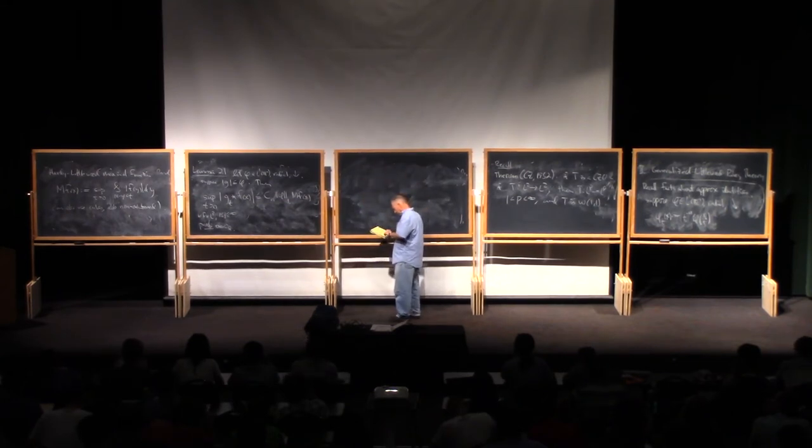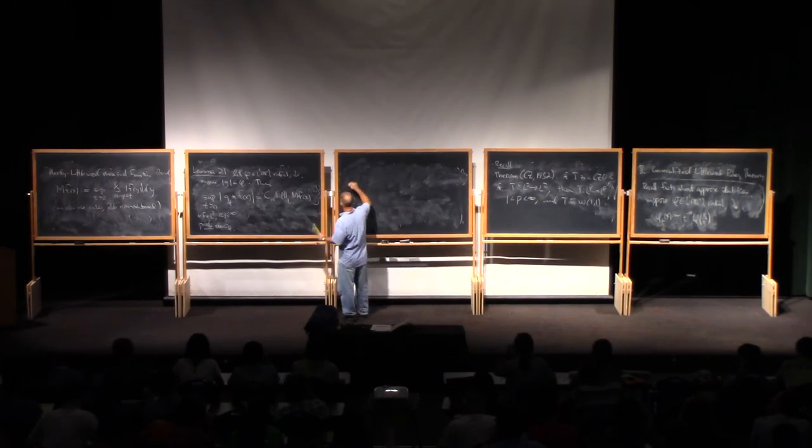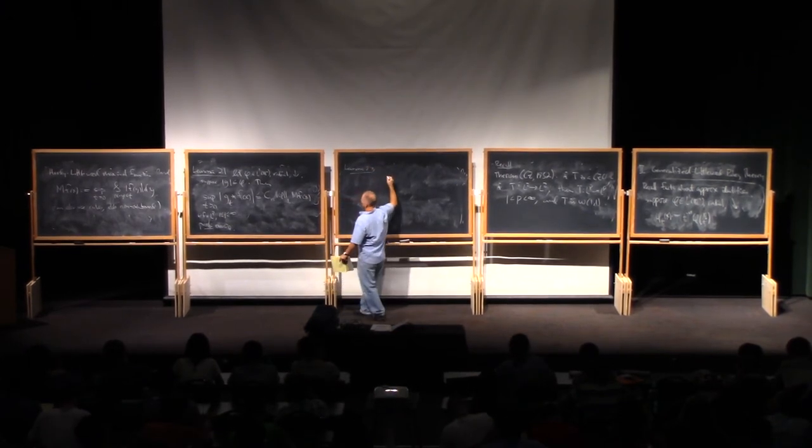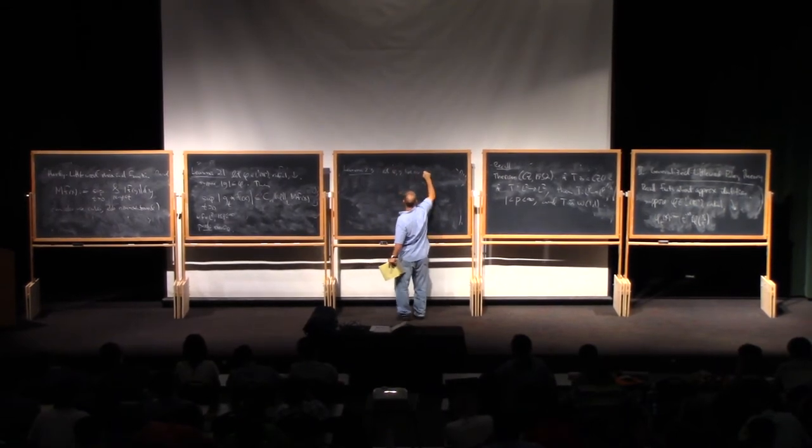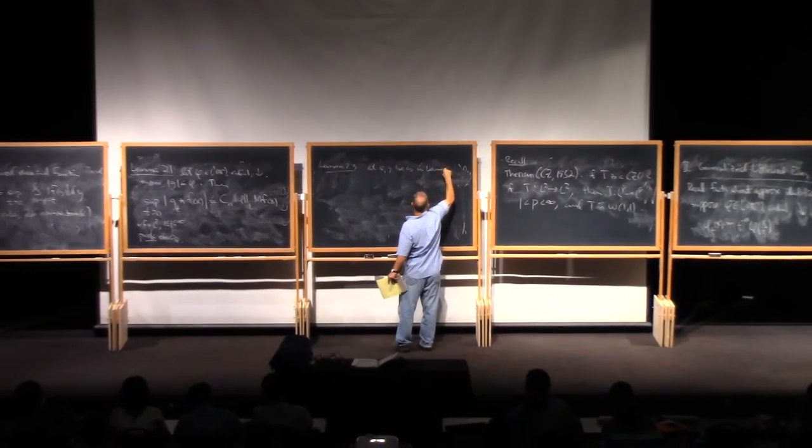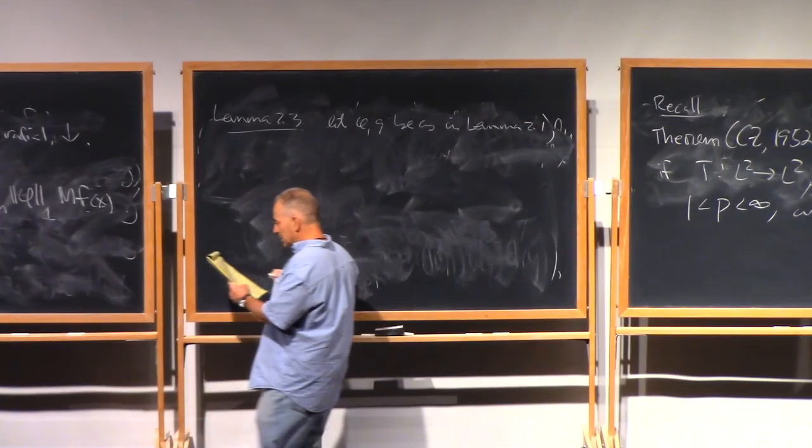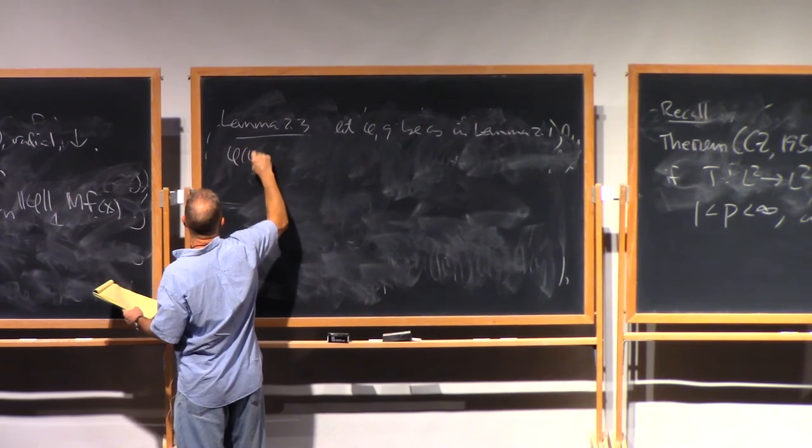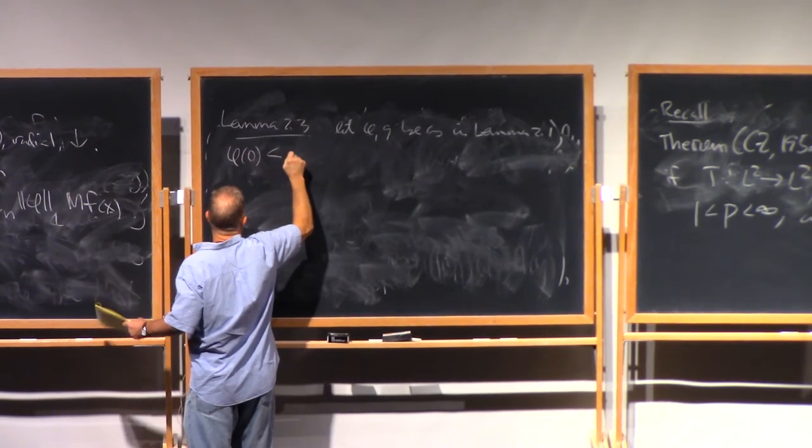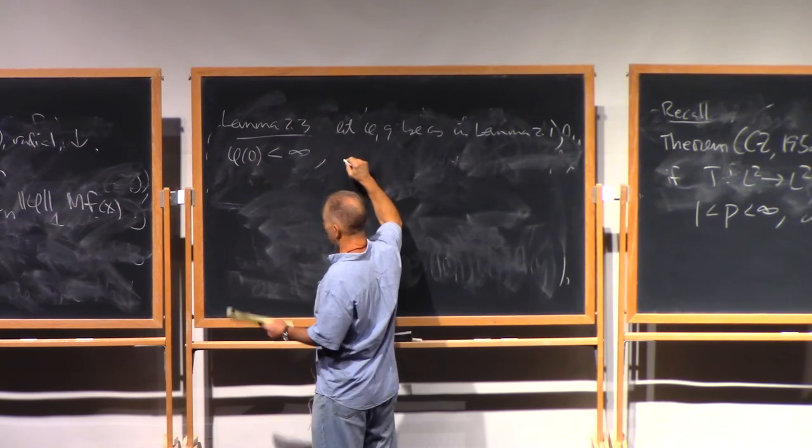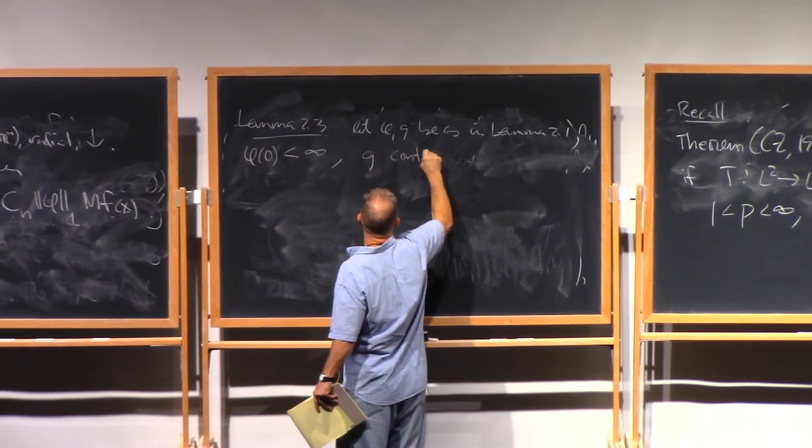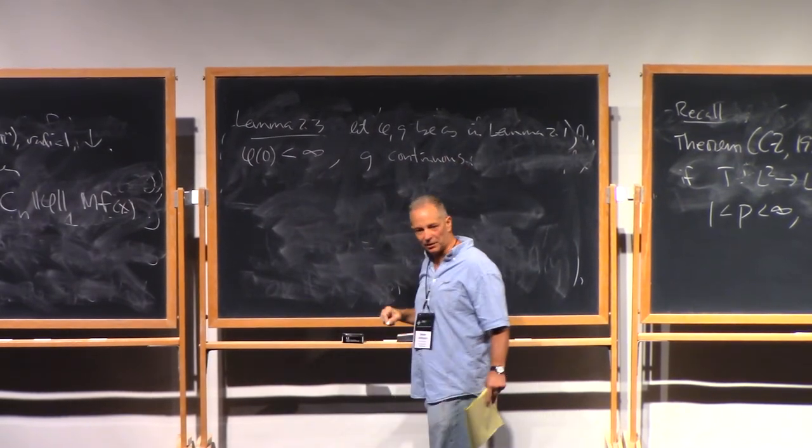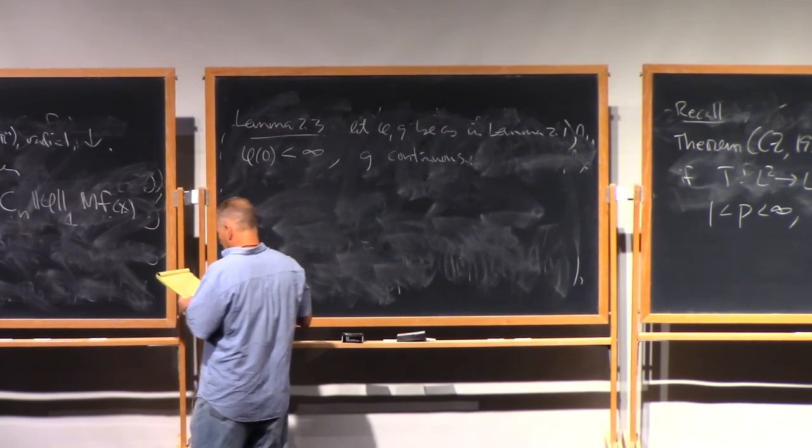And then a second related lemma. So let φ and g be as in the previous lemma. And let's also suppose that φ(0), φ of zero is finite, and that g is continuous. Don't really need that, but it makes life slightly simpler.